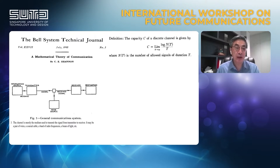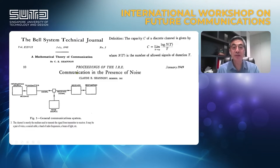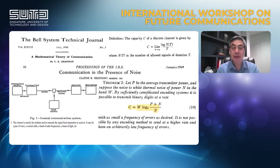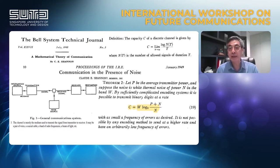Shannon defined the channel as the normal medium from transmitter to receiver, which could be a wire, coaxial cable, a band of radio frequencies, a beam of light, etc. The following year, he published another classical paper entitled 'Communication in the Presence of Noise,' in which he proposed the famous Shannon's theorem with the mathematical expression for maximum available channel capacity in equation number 19.